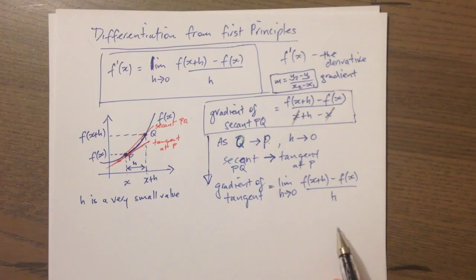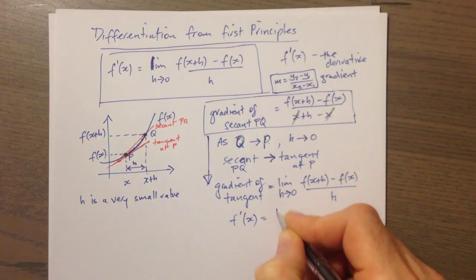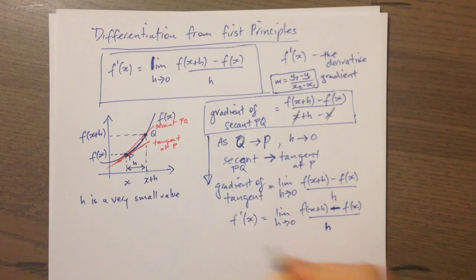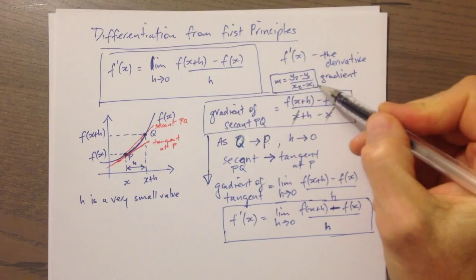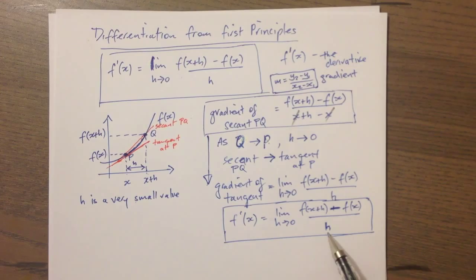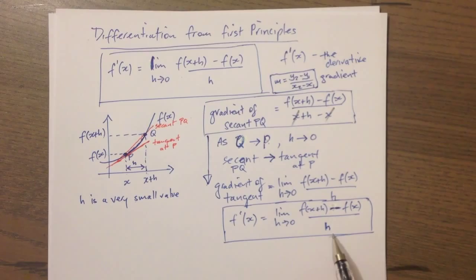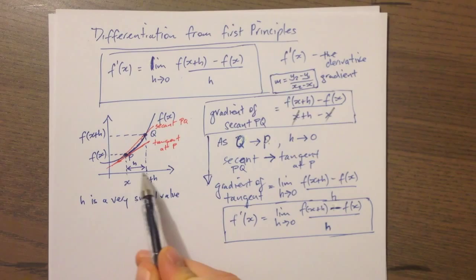So now we have our formula: f dash of x equals the limit as h approaches 0 of f of x plus h minus f of x, all over h. This is kind of a basic derivation of how to start with the familiar idea of gradient, and now we can apply it to any function — linear or non-linear. The concept is based around two points that are really close together on the curve, separated only by a small distance h.